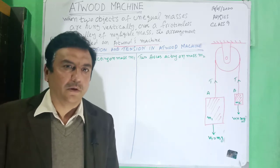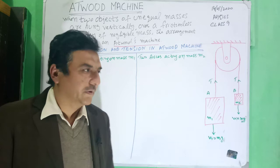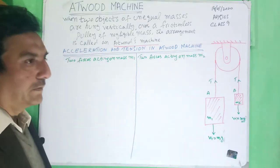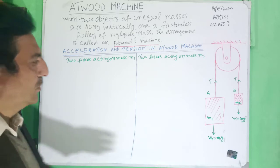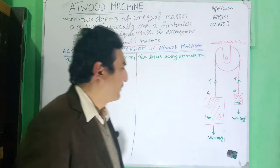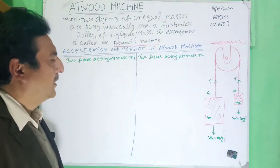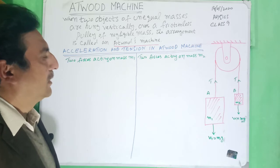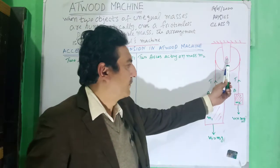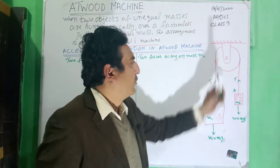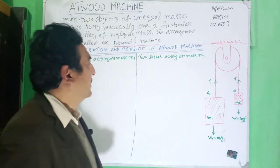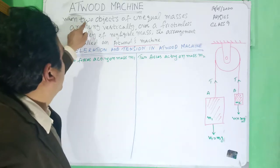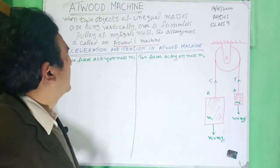Bismillahir Rahmanir Raheem. Today our topic is Atwood's Machine. What is Atwood's Machine? It consists of two unequal objects which are suspended or hung from a frictionless pulley. We can define this Atwood's Machine as when two objects of unequal masses...